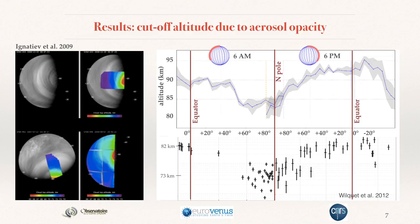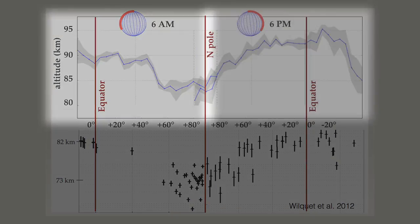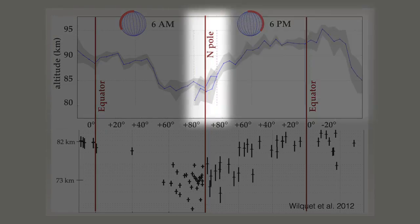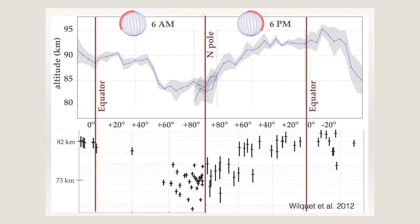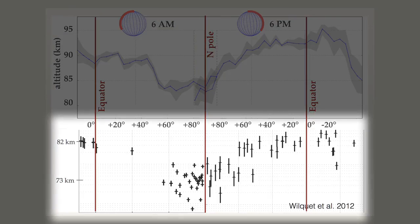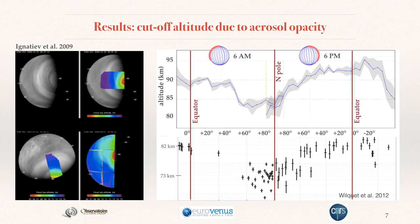Here you have the cutoff altitude to the aerosol opacity. The left part refers to the ingress, the right part to the egress, and you see an overlap region where the two measurements agree. You clearly see the depression associated with the polar vortex. In this case, the polar vortex is not centered on the pole but is shifted towards the morning terminator. We can also compare this profile to the opacity measured by Venus Express, and we see kind of agreement, even though the Venus Express measurements are obtained at different epochs and different orbits, so they are not simultaneous as our profile is.